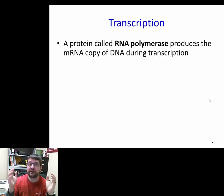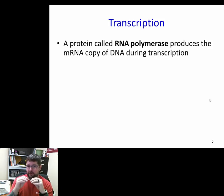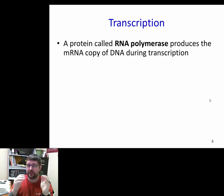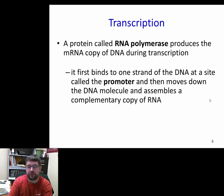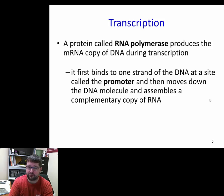When we talk about DNA copying itself, DNA polymerase is an enzyme that lays down new nucleotides of DNA. But when we're talking about transcription, we want RNA to be laid down. RNA polymerase is an enzyme that lays down new nucleotides of RNA, matching the pair to the DNA to transcribe DNA into messenger RNA. RNA polymerase doesn't need a primer, unlike DNA synthesis.